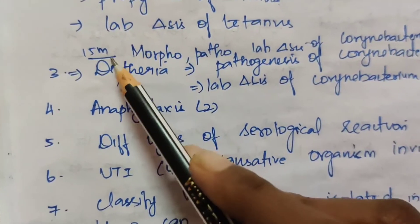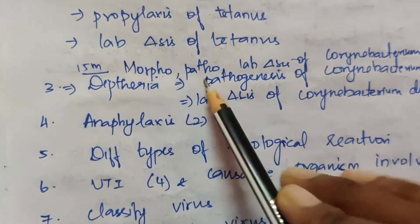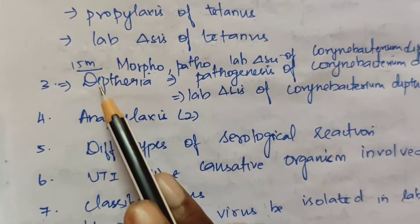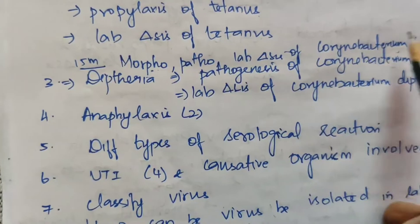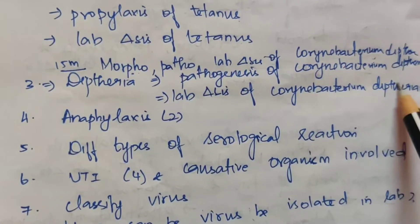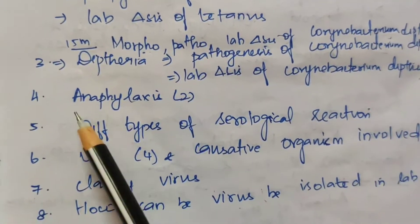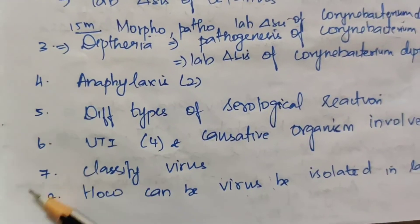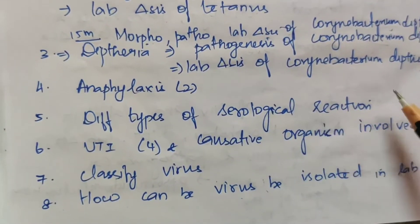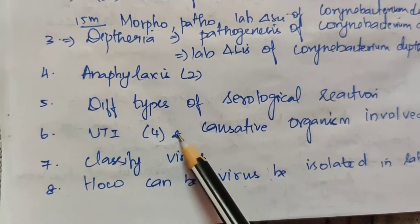For 15 marks: morphology, pathogenesis, and lab diagnosis of Corynebacterium diphtheriae. For 5 marks: diphtheria, pathogenesis of Corynebacterium diphtheriae, and lab diagnosis of Corynebacterium diphtheriae. The fourth 5-mark topic is anaphylaxis — appeared 2 times. The fifth: different types of serological reactions. The sixth: UTI — appeared 4 times, with particular organisms involved.